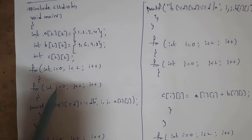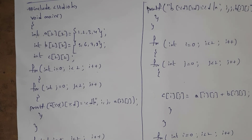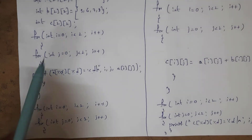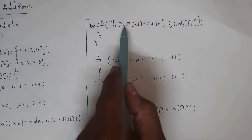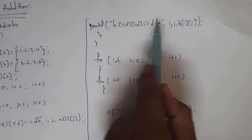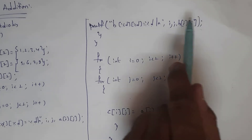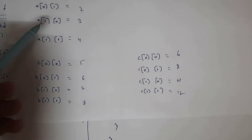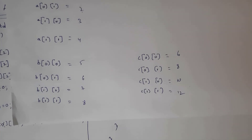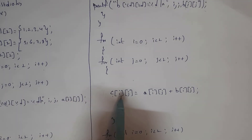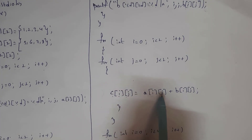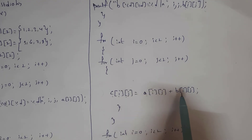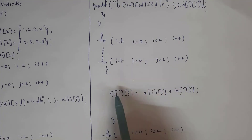Similarly to print matrix B, I take the same two for loops and inside I written printf: b[%d][%d] = %d\n, passing i, j, and b[i][j] — matrix B is then printed on the output screen. To add the two matrices and store in matrix C, I take the same two for loops and inside I written: c[i][j] = a[i][j] + b[i][j], adding matrix A and matrix B and storing the result in matrix C.